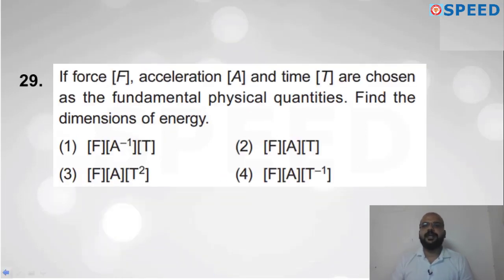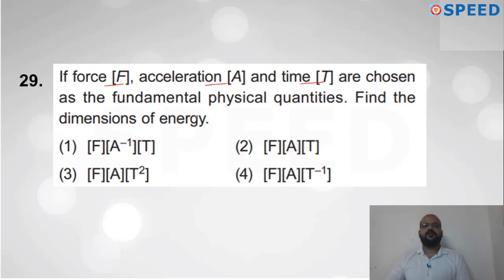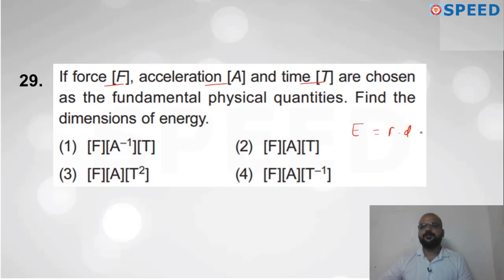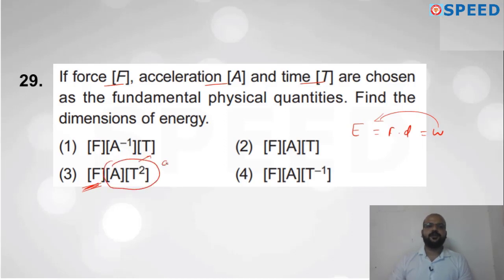Question twenty-nine: Force F, acceleration A, and time T are chosen as fundamental quantities. Find dimension of energy. Energy = force × displacement = F × AT². So energy in terms of F, A, T is F·A·T². Checking options: only option number 3 is correct. The others are wrong options.